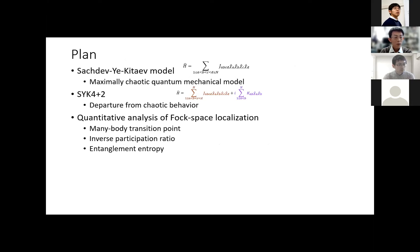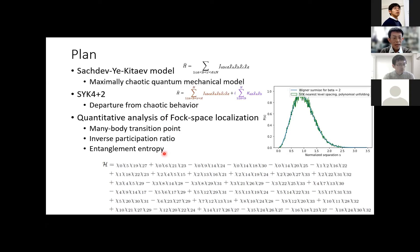This is the plan of my talk. After introducing the SYK-type model as a maximally chaotic quantum mechanical model, I introduce a modification called the SYK4 plus 2, which deviates from the chaotic behavior. We argue that this is a many-body localization and show that we can analytically predict the many-body transition point and inverse participation ratio, which agree with numerical results from exact diagonalization. We also discuss whether the eigenstate outside the localized regime is ergodic by studying the entanglement entropy. At the end of the talk, I point out that a simple Hamiltonian, much simpler compared to the SYK model, could behave like the SYK model. If you know someone working on this variant of the sparse SYK model with Gaussian random coupling, please let me know.